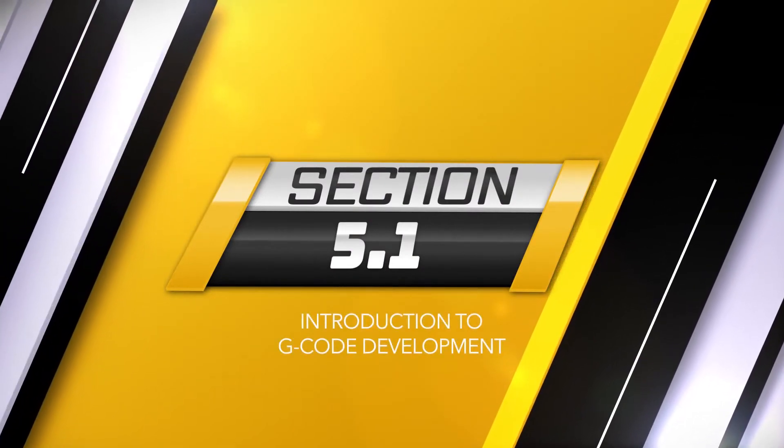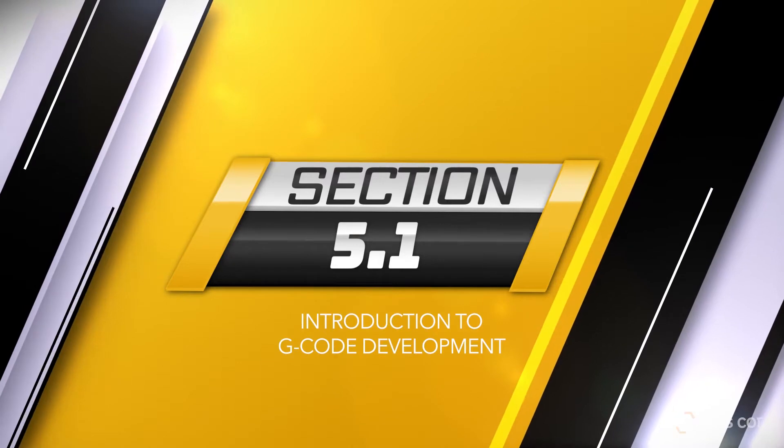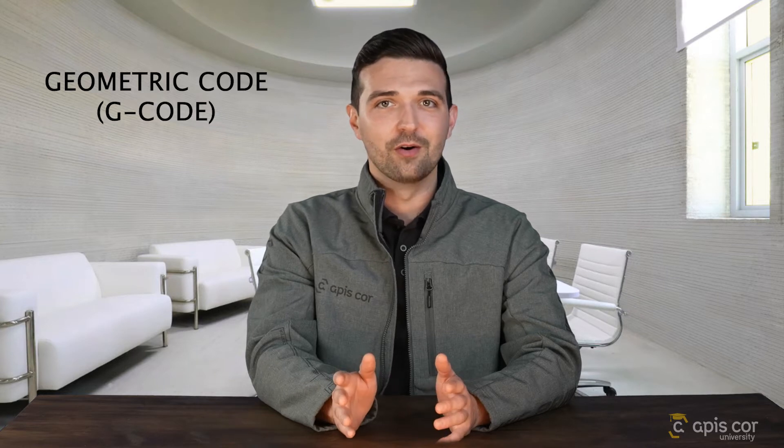Section 5.1: Introduction to G-Code Development. Let's cover a brief introduction to G-Code development. As you may have guessed, Frank the Construction 3D Printer does not speak English because Frank's a robot. Instead, Frank speaks a different language that most other types of plastic, resin, and concrete 3D printers also speak. That language is called Geometric Code, or G-Code.